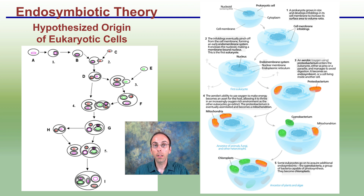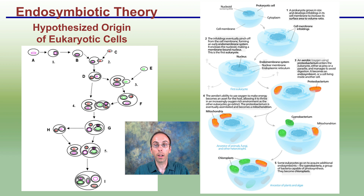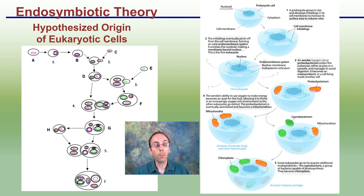Now two organelles in particular — if we're talking plant cells for sure — are very complex. They're the mitochondria and the chloroplast. If we're talking animal cells, we're just looking at the mitochondria. Mitochondria and chloroplasts are very complex, very unique structures, so odds are that they probably just didn't come from endomembrane foldings.